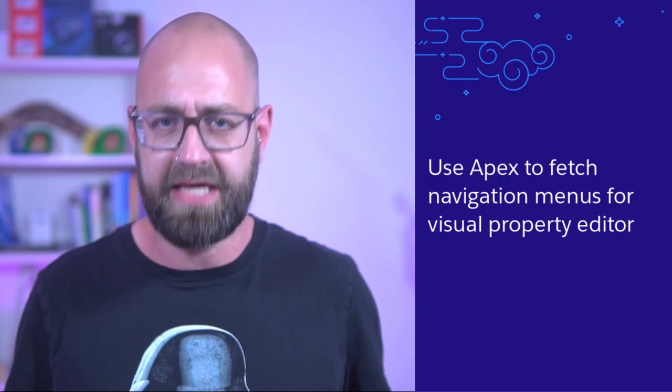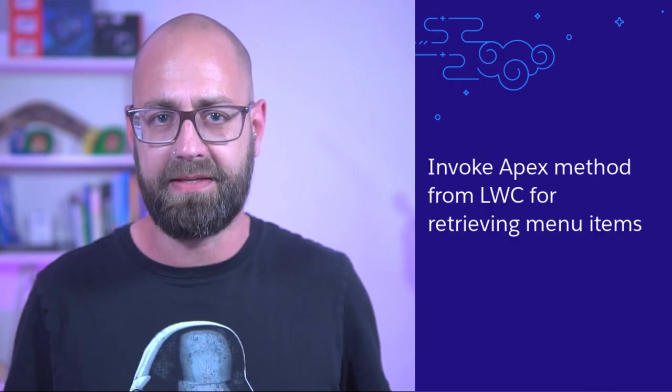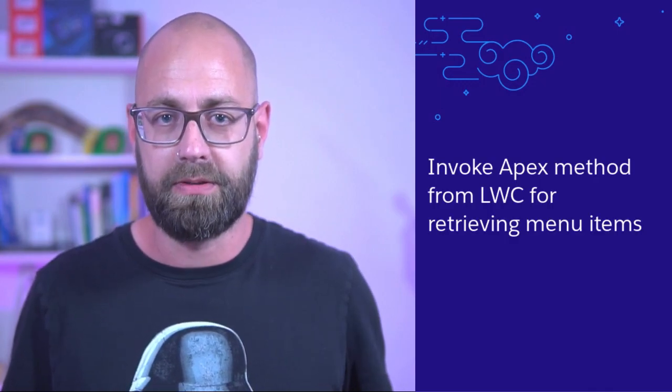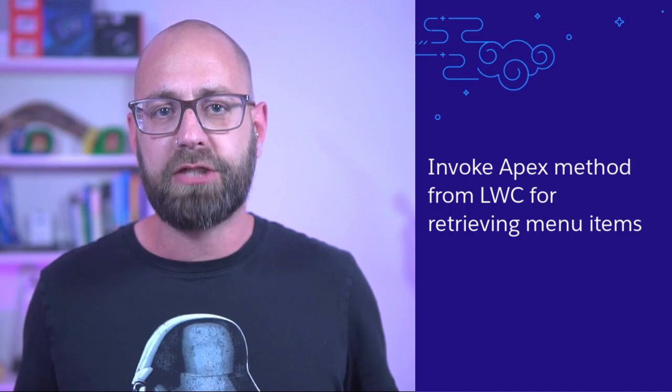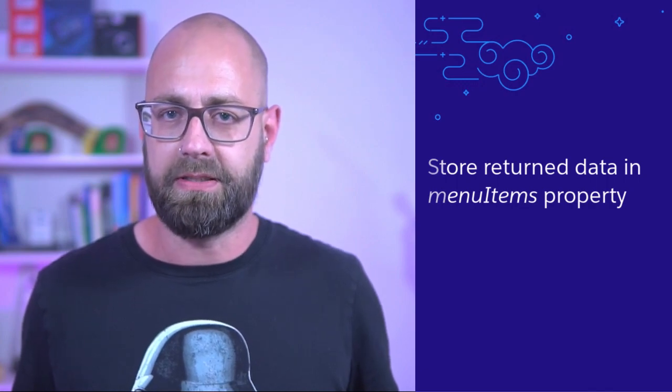That was a lot, so let me summarize. We build an Apex class to fetch the list of navigation menus. Then we call the getNavigationMenuItems Apex method from our Lightning Web Component, which fetches the actual menu item records for us. We store the returned data in our menuItems property. And then — well, what are we doing with them? Let's go back to the code one more time.